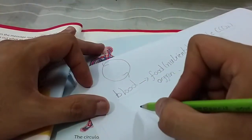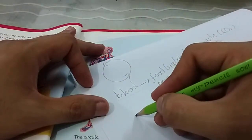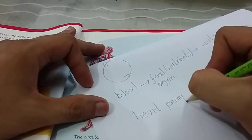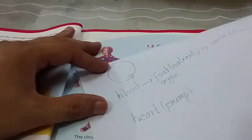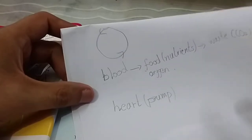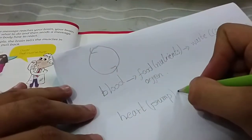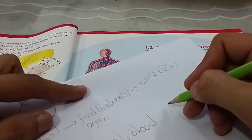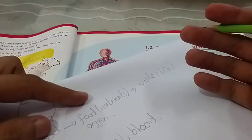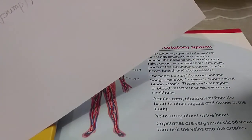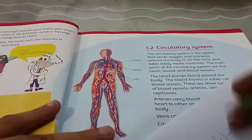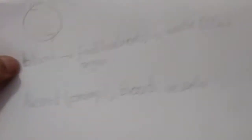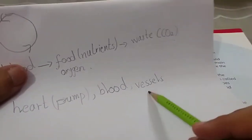The circulatory system has different parts. The main part is the heart — the heart is the pump. We also have the blood, and then we have the different types of pipes, which we call vessels.